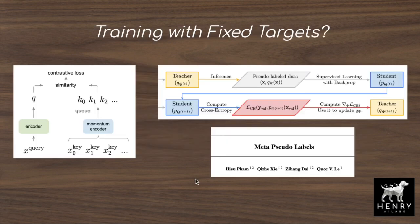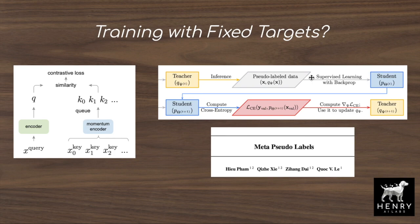An interesting idea in MoCo is training with dynamic targets instead of fixed targets. Unlike supervised learning where class label vectors are constant, queries and keys evolve together throughout training. This connects to the meta pseudo labels paper, which dynamically adjusts targets during training — suggesting dynamic moving targets may help neural networks escape local optima and serve as a form of regularization.